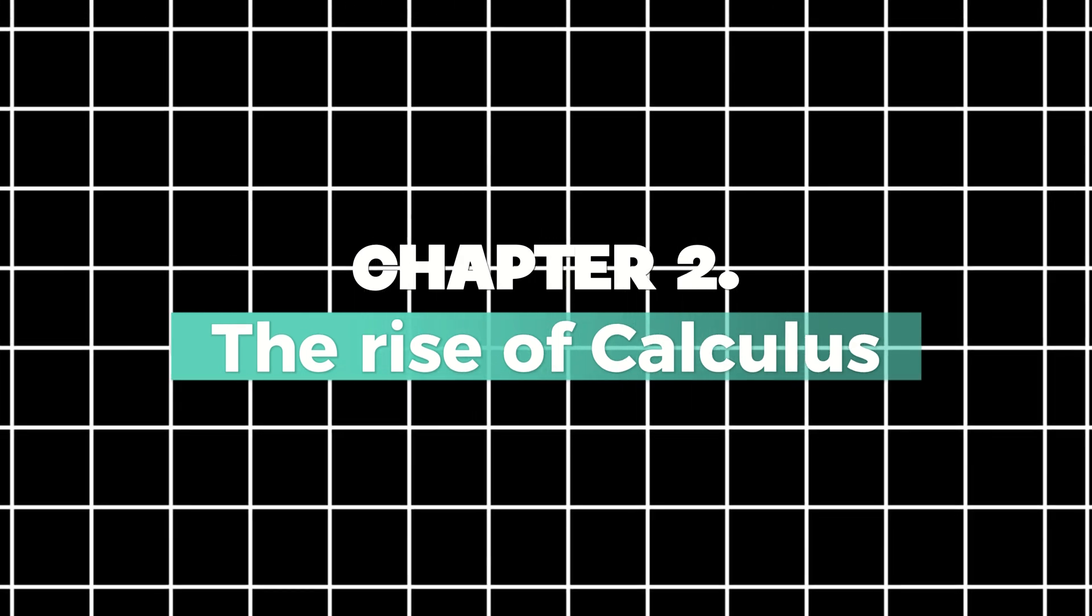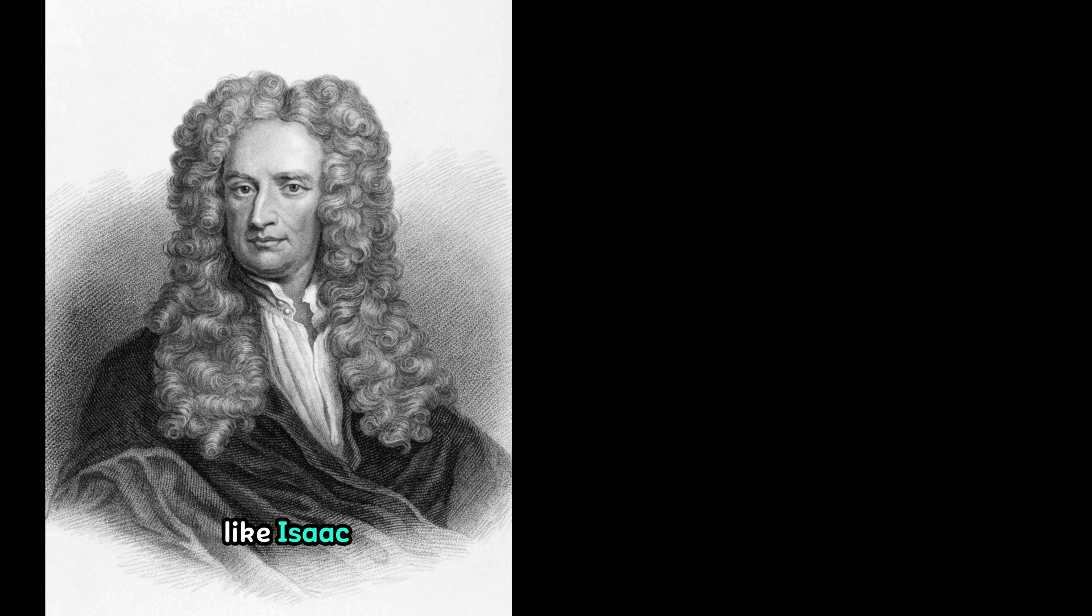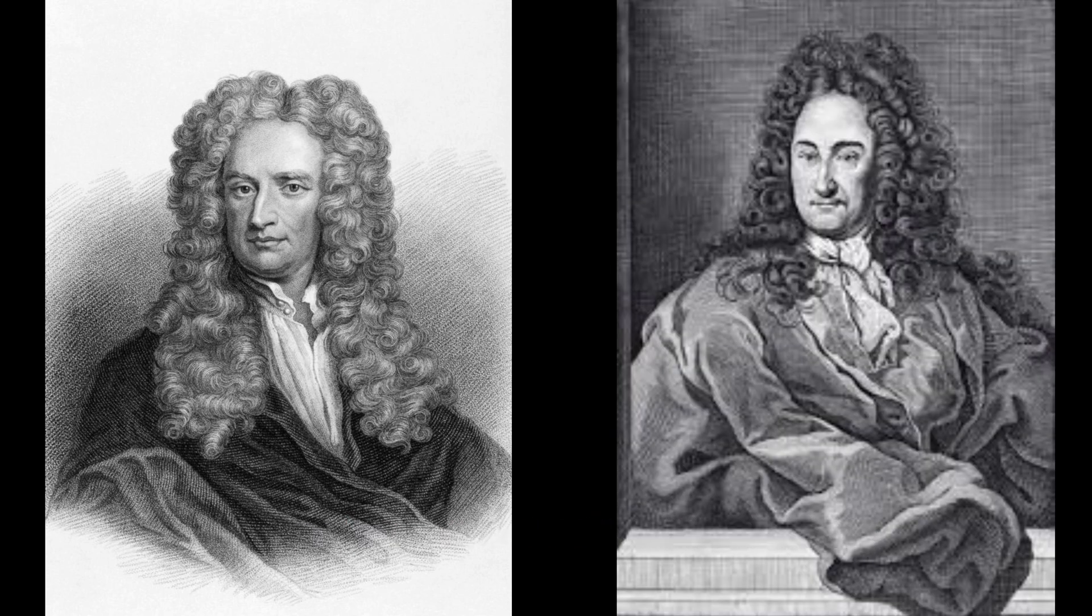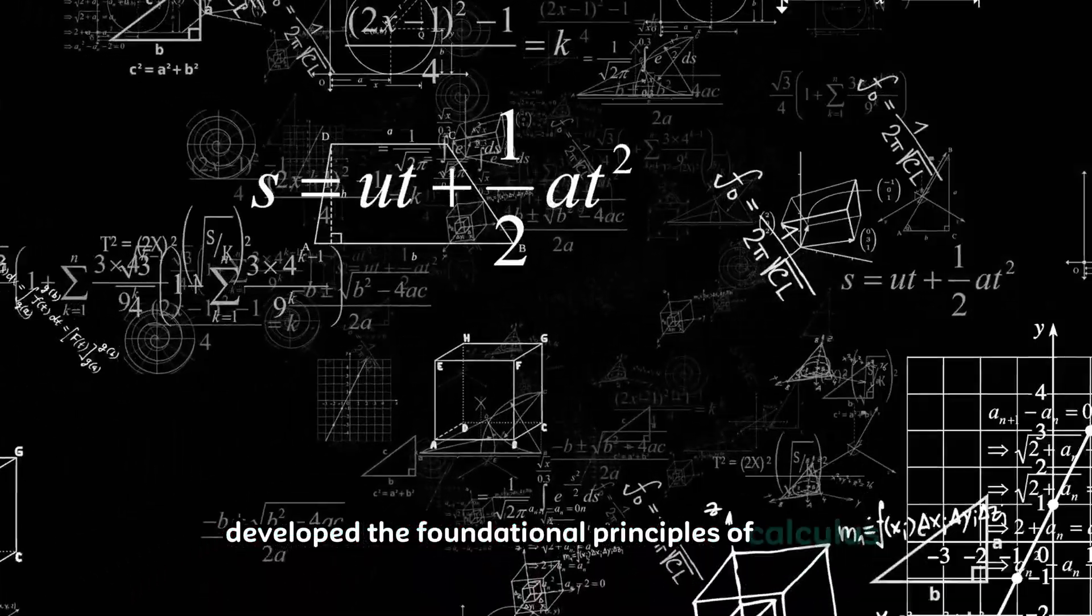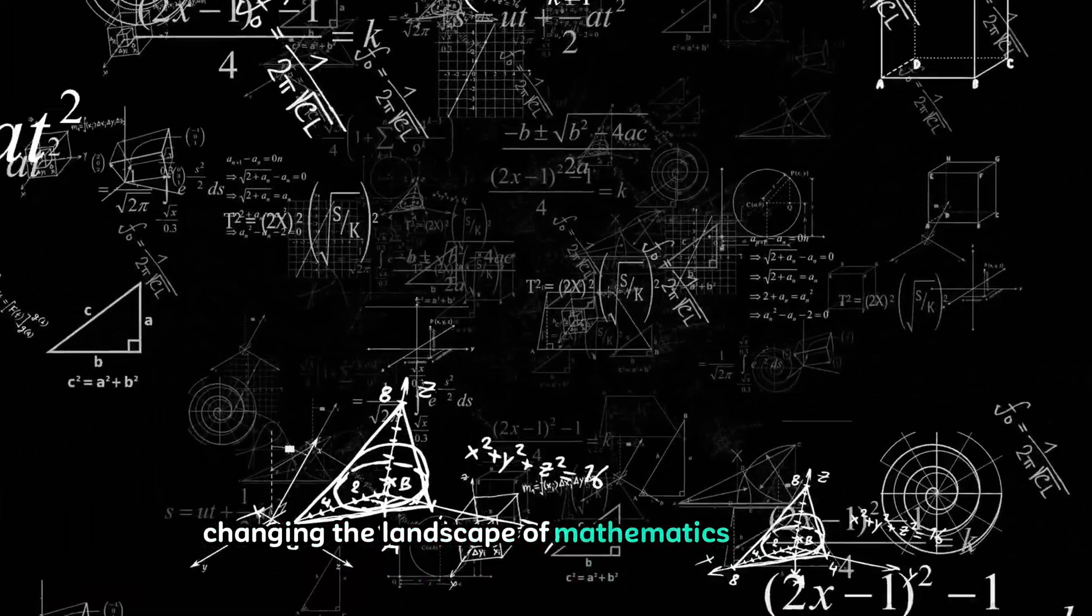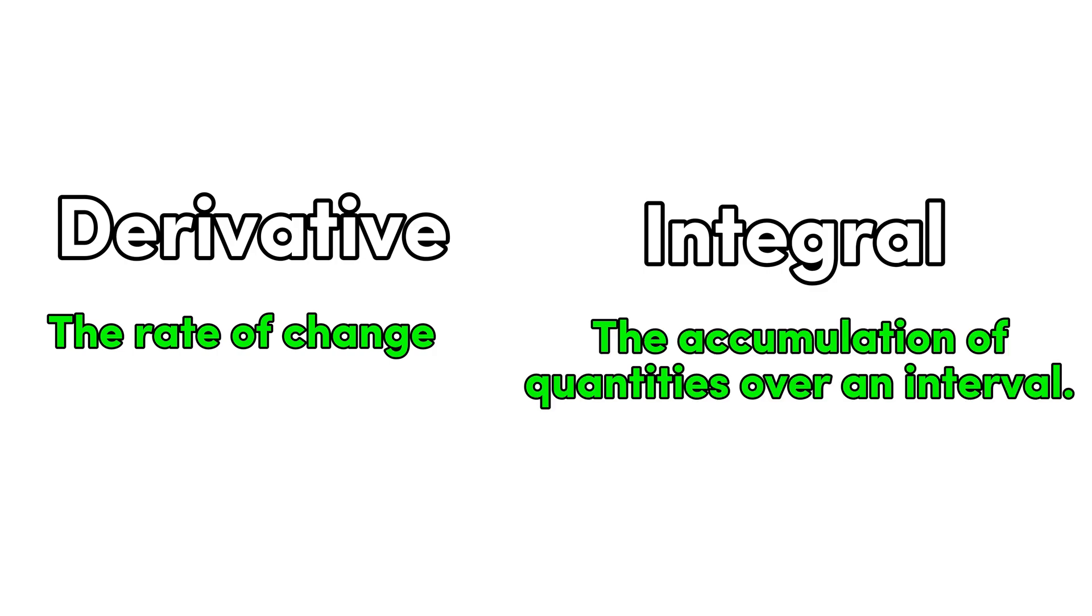Chapter 2. The Rise of Calculus. The dawn of the 17th century witnessed a revolution in mathematics with the groundbreaking work of luminaries like Isaac Newton and Gottfried Wilhelm Leibniz. Independently and almost simultaneously, Newton and Leibniz developed the foundational principles of calculus, forever changing the landscape of mathematics and science. Central to the development of calculus were two key concepts, the derivative and the integral. The derivative measures the rate of change of a function, while the integral calculates the accumulation of quantities over an interval. Together, these concepts provide a comprehensive framework for understanding change and motion in the physical world.